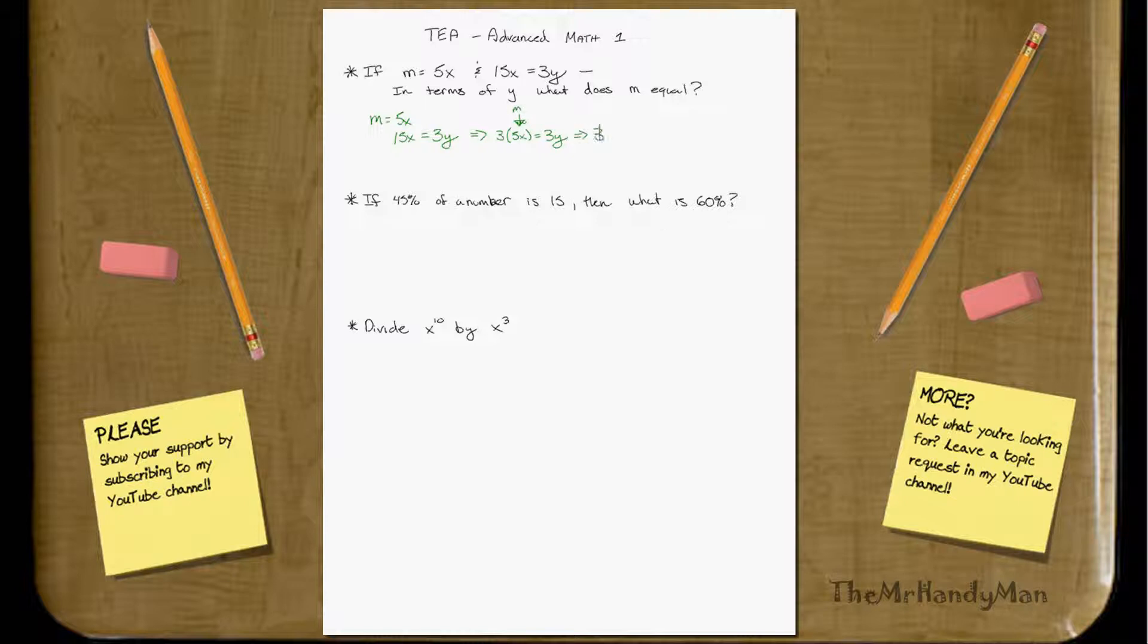So what that equals is 3m equals 3y. And you can divide both sides by 3 and knock that out. And what you get is m equals y. Fairly simple.